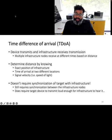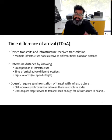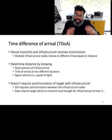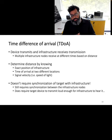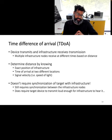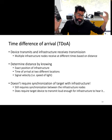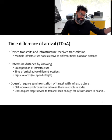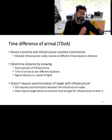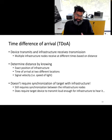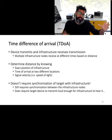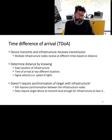To overcome this synchronization challenge, another method is employed: Time Difference of Arrival (TDoA). This method determines the location of the target device by knowing the precise location of anchor nodes and using the difference in arrival time of a wireless signal at two different anchor points. The target device sends a small message received by multiple anchor nodes distributed in the environment, and the difference in arrival times at these nodes is used to estimate location. Importantly, this method requires synchronization only between the anchor nodes — not between the target and the anchor — making it easier to apply to IoT nodes.